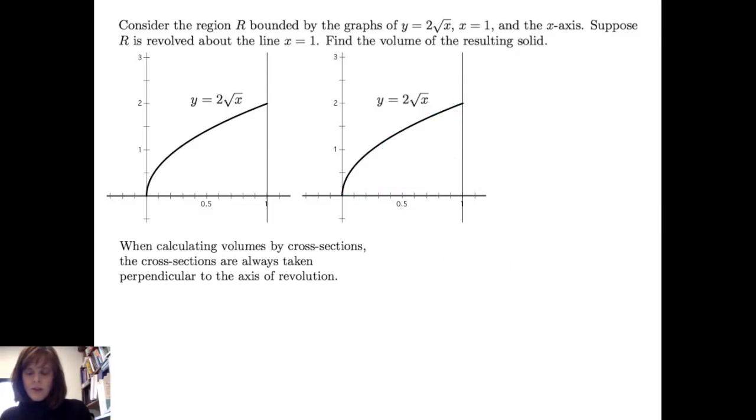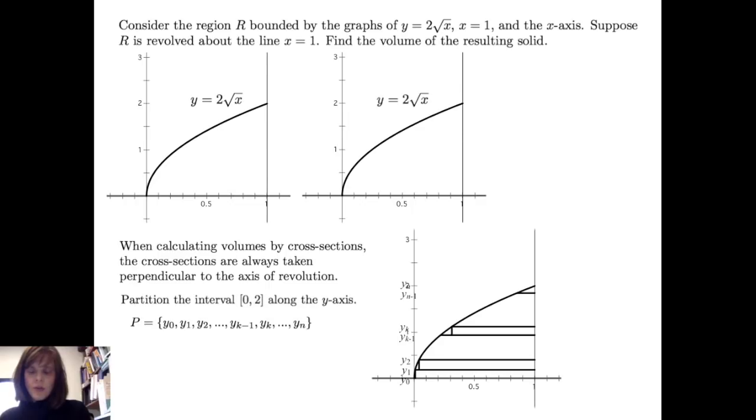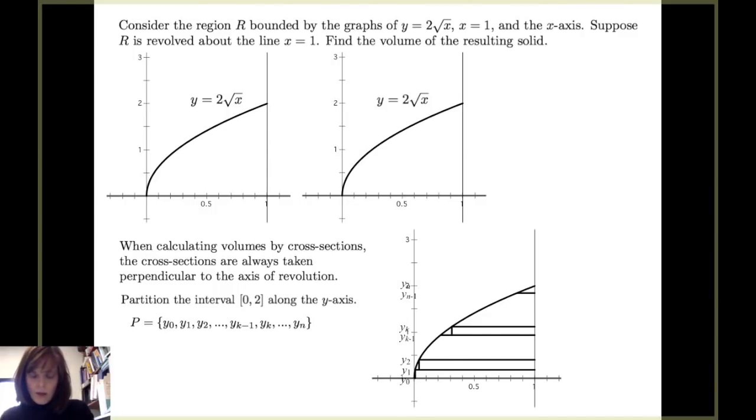To proceed with solving this problem, I have to consider that when we're calculating volume by cross-section, the cross-sections are always taken perpendicular to the axis of revolution. So that when I partition the interval, my partition is going to be, in this case, along the y-axis because that's where my cuts will occur.